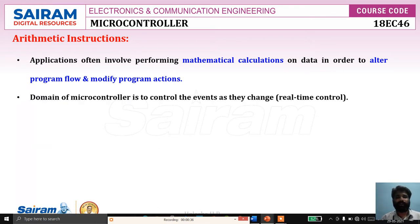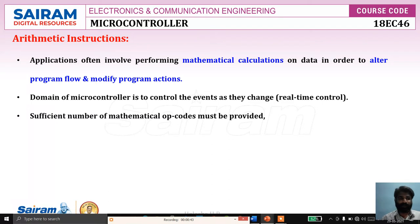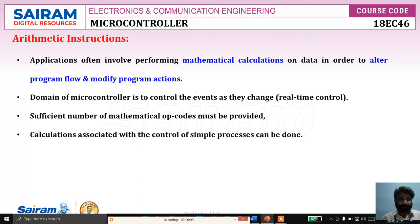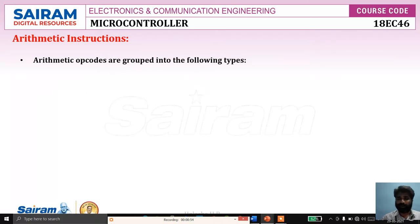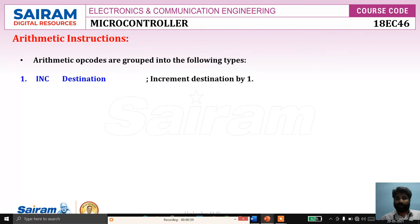The main domain of a microcontroller is to control events as changes in real-time control. For that purpose, we must have a sufficient number of mathematical opcodes. This calculation may be associated with the control of simple processes. These arithmetic opcodes are grouped into the following types.